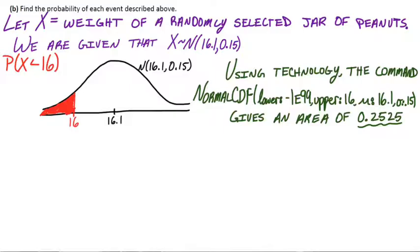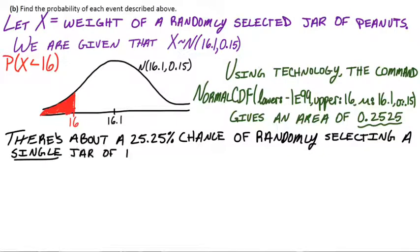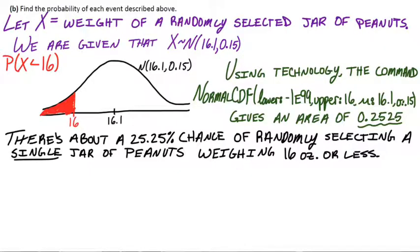We need to give this answer in context. There's about a 25.25% chance that we would randomly select a jar and it actually weighs 16 ounces or less. Keep in mind that's just for one single jar though.